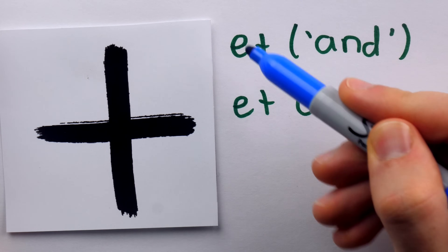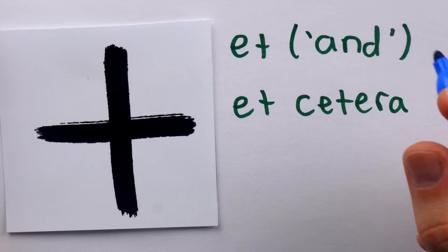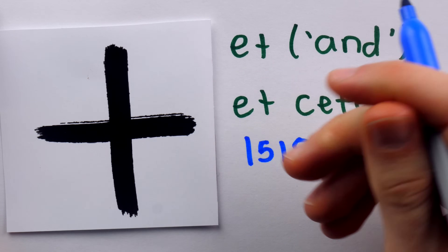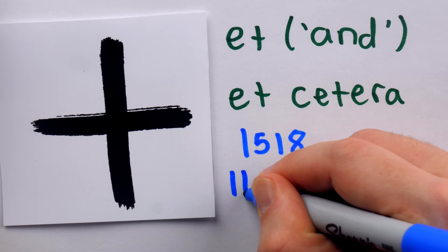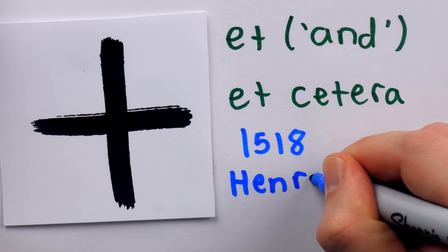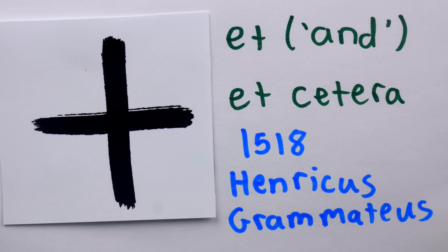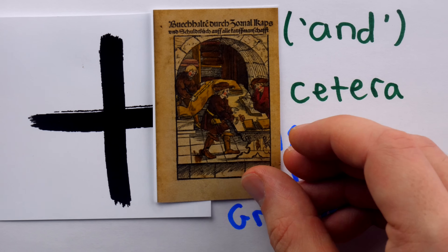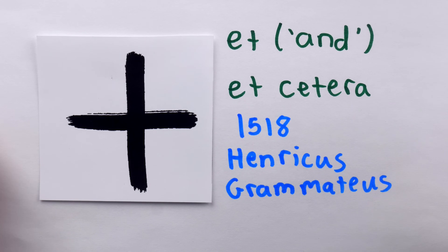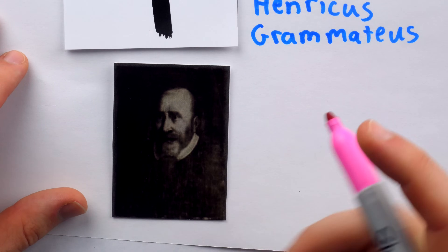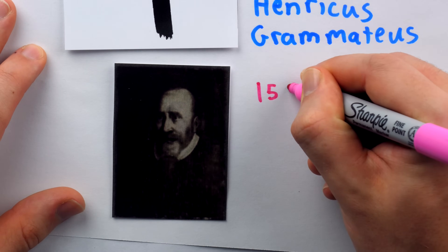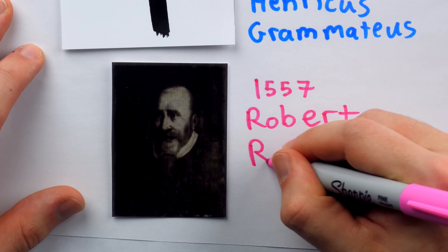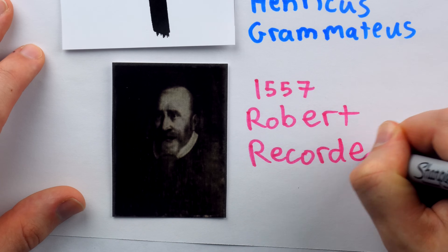It wasn't until 1518 that the plus sign was used in the sense that we know today — by a German fellow named Henrikus Grammateus in an arithmetic book he wrote. Then in 1557, Robert Recorde introduced the plus sign in Britain. Robert is very well known for his introduction of the equals sign, and he has his hands all over our mathematical notation.